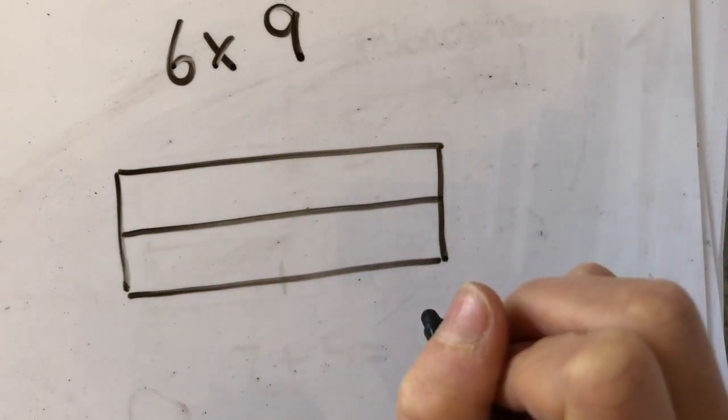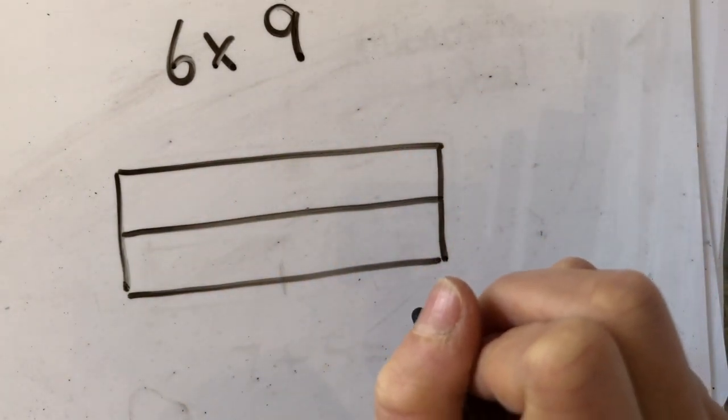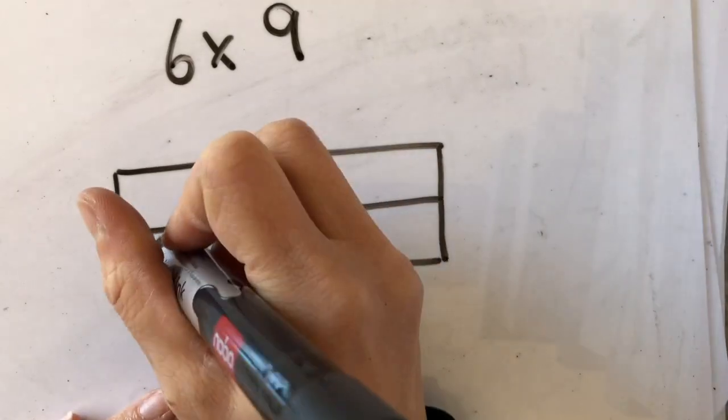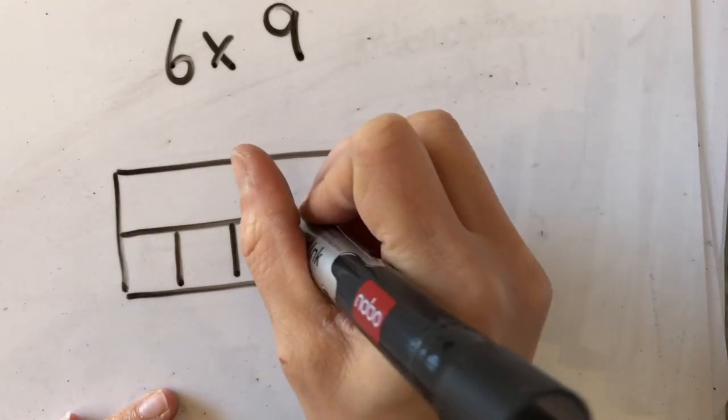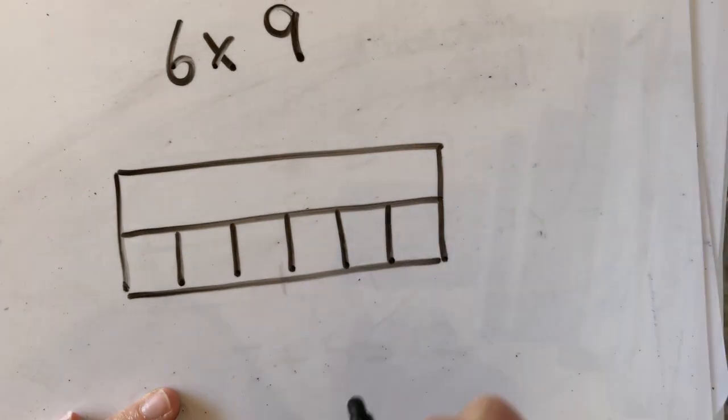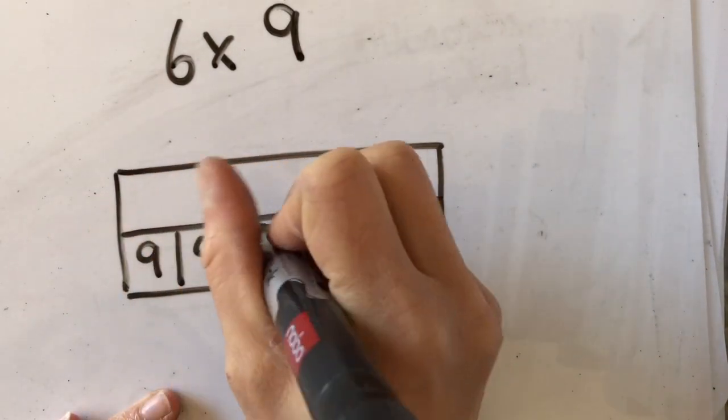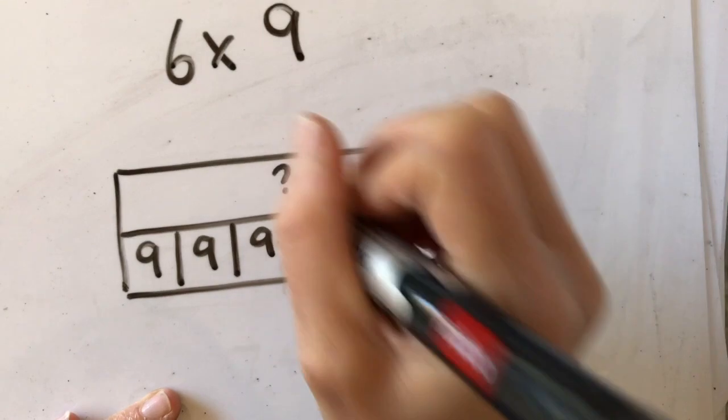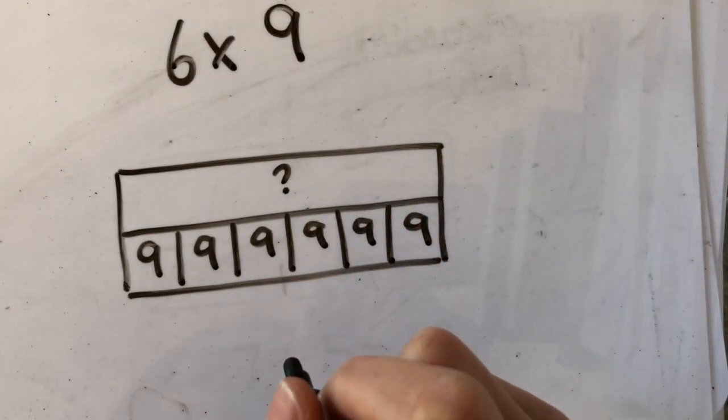With 6 times 9, I have got six groups of 9. So I have got six groups: 1, 2, 3, 4, 5, 6, and then each group is worth 9, and that's giving me my unknown total.